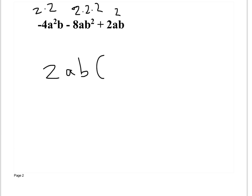So what you do is you take 2ab out of each one of these. -4a²b. When we take 2ab out of it, what do you have left? When I take it out of -4a²b, I'm left with -2a. When I take 2ab out of -8ab squared, I'm left with -4b. And when I take 2ab out of 2ab, I'm left with 1. And there's my answer.